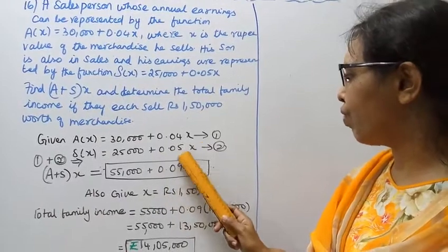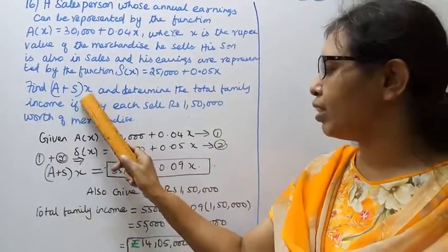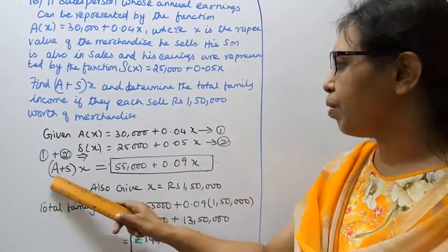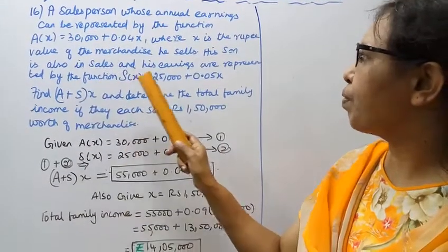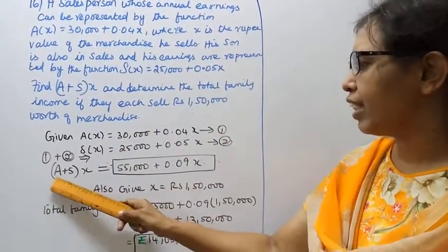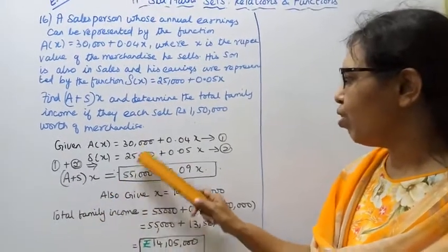We need to find (A+S)(x). The salesperson and his son - that is equal to adding 30,000 + 25,000 = 55,000